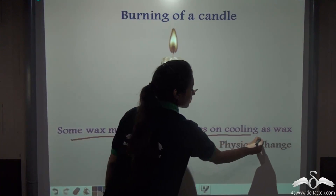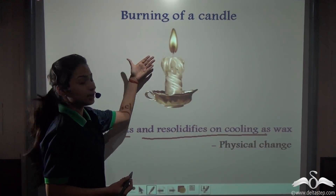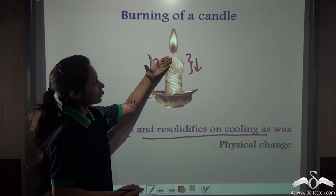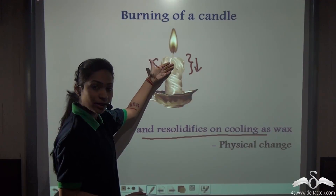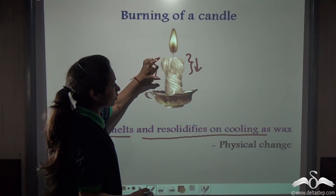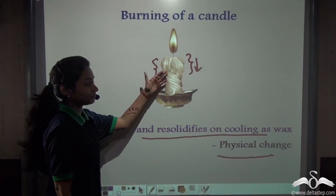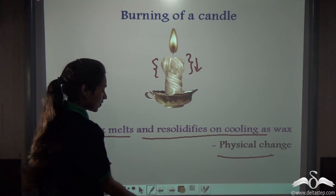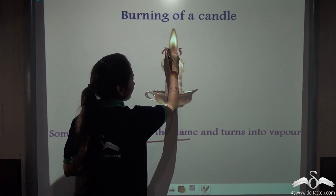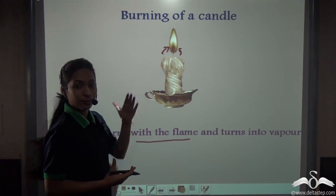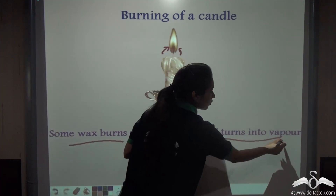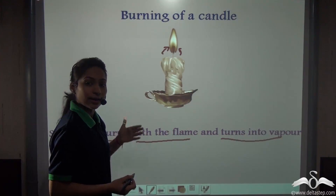Some wax melts and re-solidifies on cooling as wax. Whenever a candle burns, you can see that some wax melts. Now, this wax which is melting is again re-solidifying here — you can see it is getting thicker, it is re-solidifying. As we are getting it back, you can say that this is a physical change. Where is the chemical change coming from? Some wax burns with the flame — that is why the flame is burning. Some wax burns with the flame and that is turning into vapour, and this is what we call a chemical change.